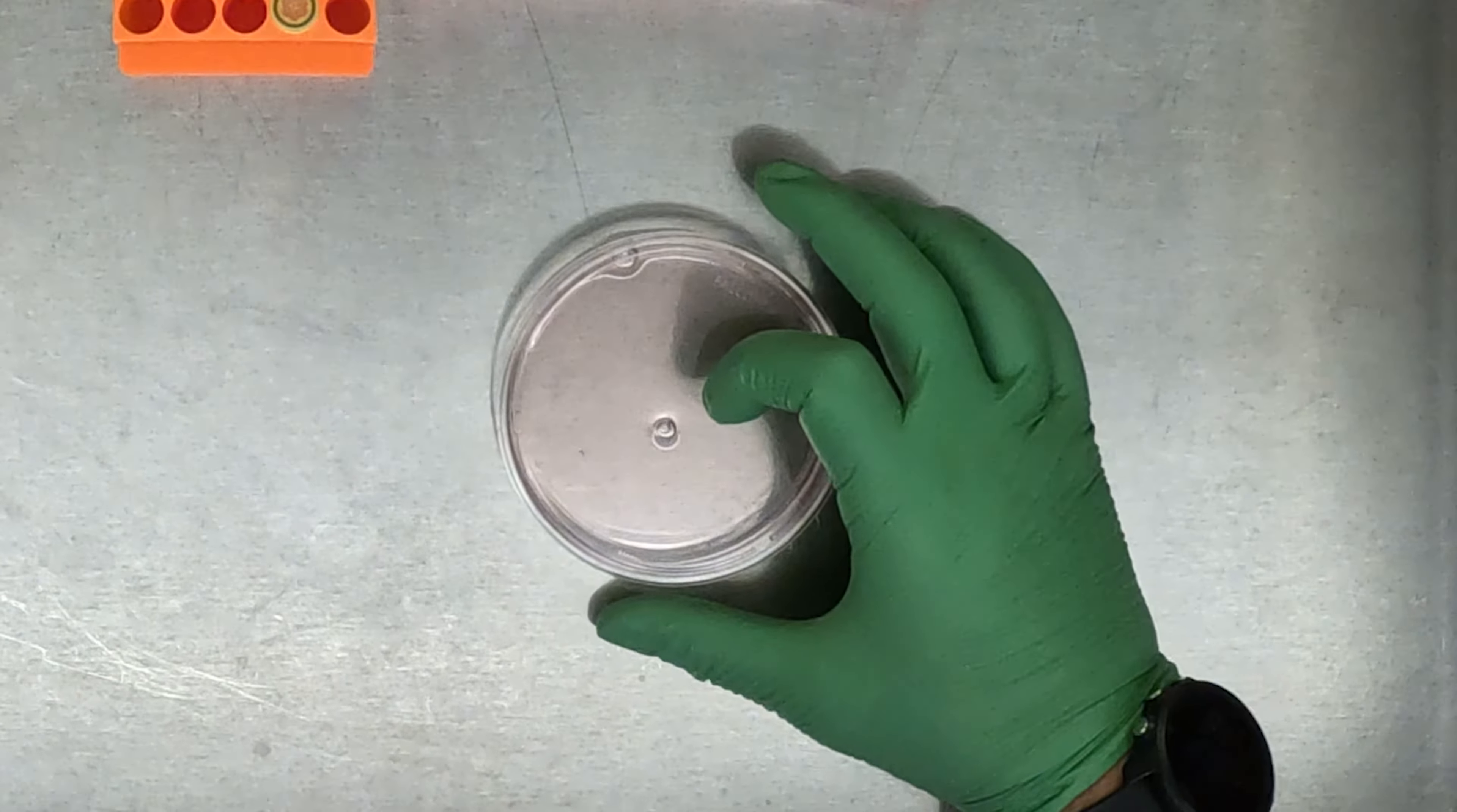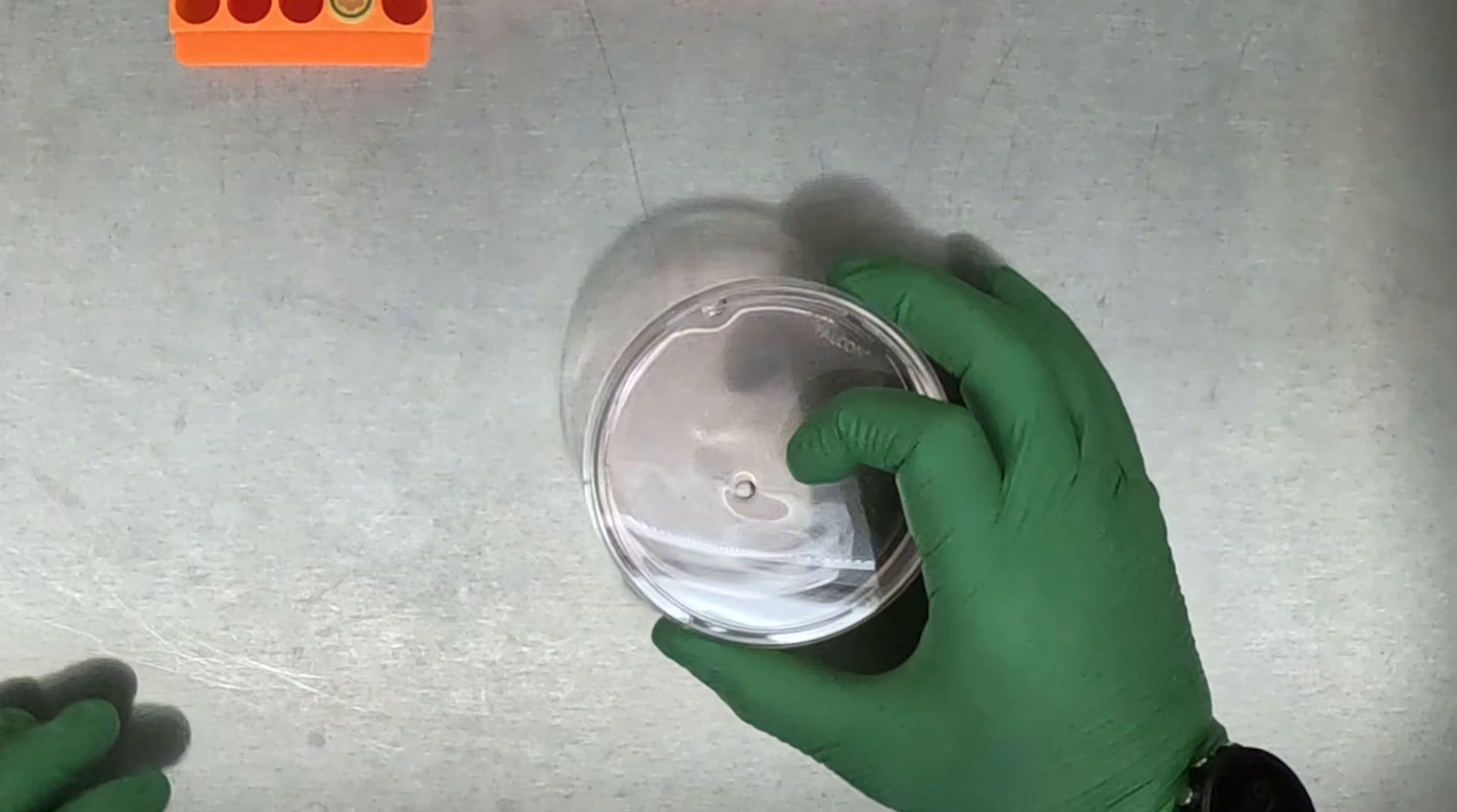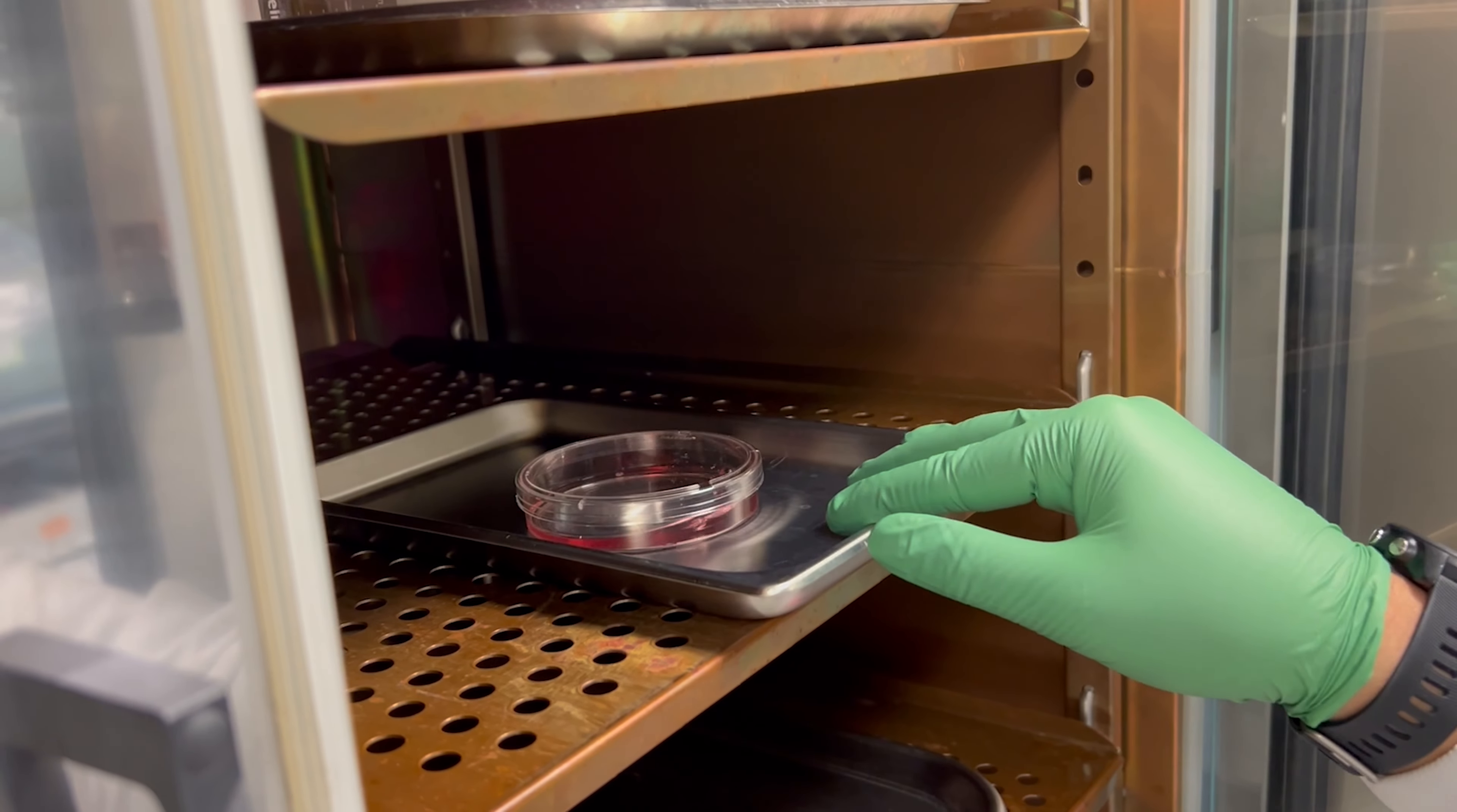Once you have done that, place the cells in a 37 degree C incubator and allow them to grow for 24 hours before replacing the media with M-Teaser without rock inhibitor. Once you have placed your cells in the incubator, gently move them back and forth and side-to-side to ensure equal distribution across the plate.